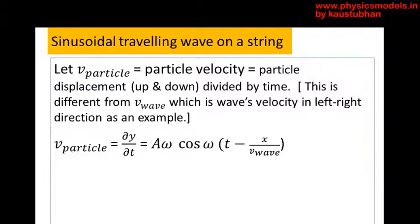To calculate the velocity of the string particle, which is moving up and down, at a given point of time, we simply differentiate the displacement with respect to time, just like speed is distance by time.